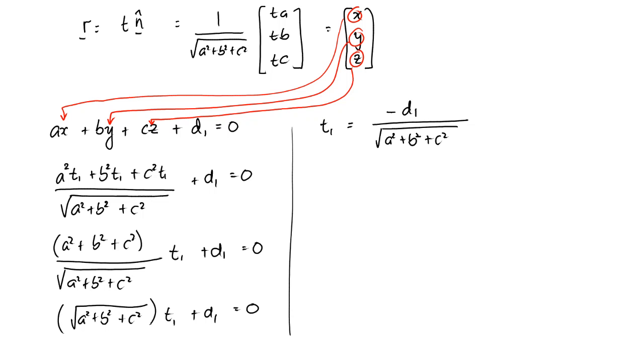Then t2, by exactly the same logic, is going to be negative d2 over the square root of a squared plus b squared plus c squared. So our distance between the planes is the absolute value of t2 minus t1, which equals the absolute value of d2 minus d1, all over the square root of a squared plus b squared plus c squared. So given the two linear formulae for two parallel planes, so long as you scale the equation so they both have the same a, b, and c, you can just apply this formula to get the distance between them.